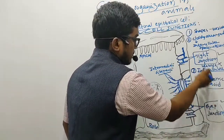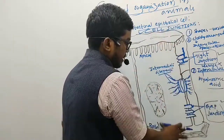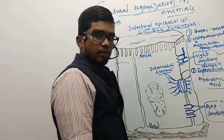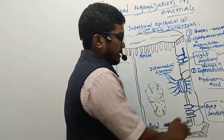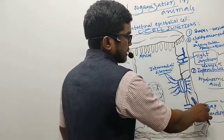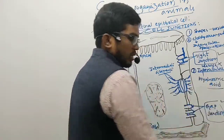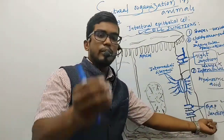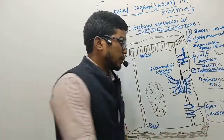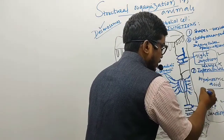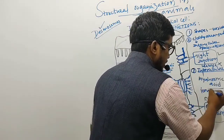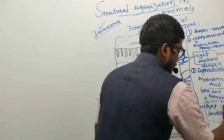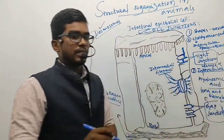In between tight and gap junctions, in the case of intestinal epithelial cells, there are certain intermediate filaments. Next, gap junctions help in the movement of ions and biomolecules — the movement of ions and biomolecules can occur through the gap junctions.